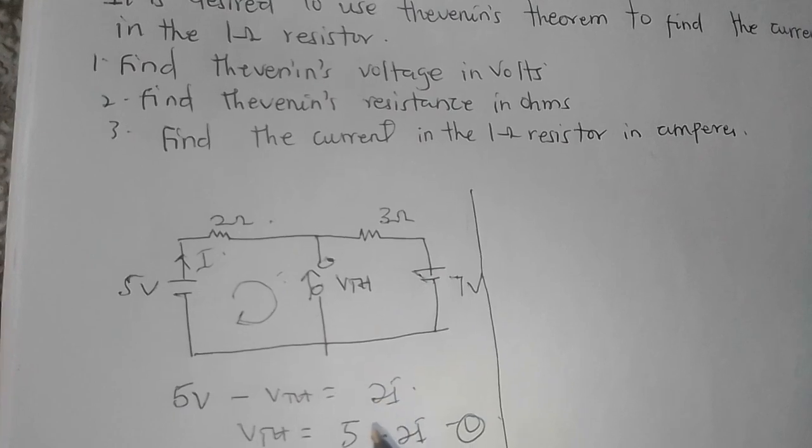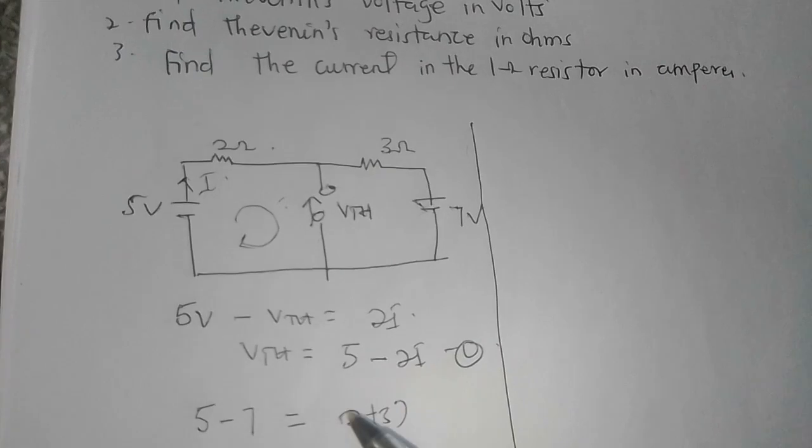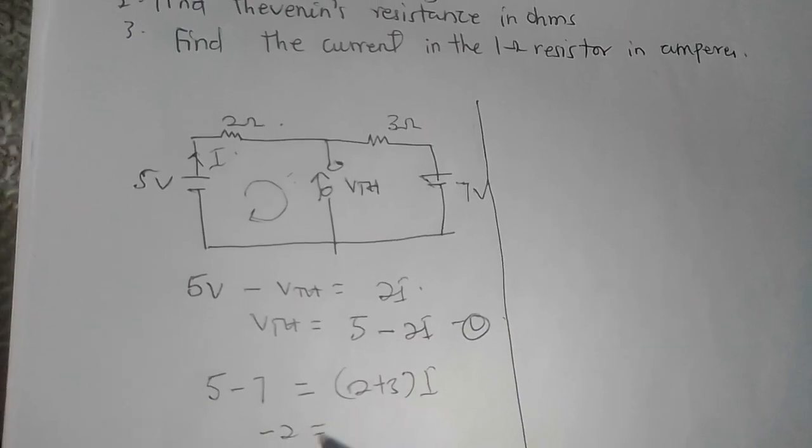Since the current passing through is the same, I'll just add the 2 resistors: 2 plus 3 multiplied by I. Hence I'm going to get negative 2 equal to 5I.